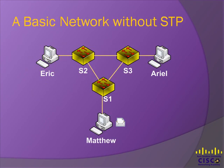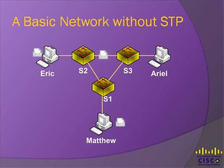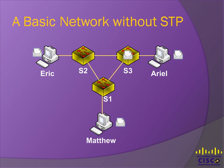Let's observe this basic LAN switching environment which has not been configured with STP. Matthew sends out a broadcast frame through switch 1, which forwards it to Eric via switch 2. Switch 2 then forwards the frame to Ariel through switch 3. Switch 3 also forwards the packet back to switch 1, causing a loop. The frame will continue to loop until something is done to break it, such as a change in an interface.